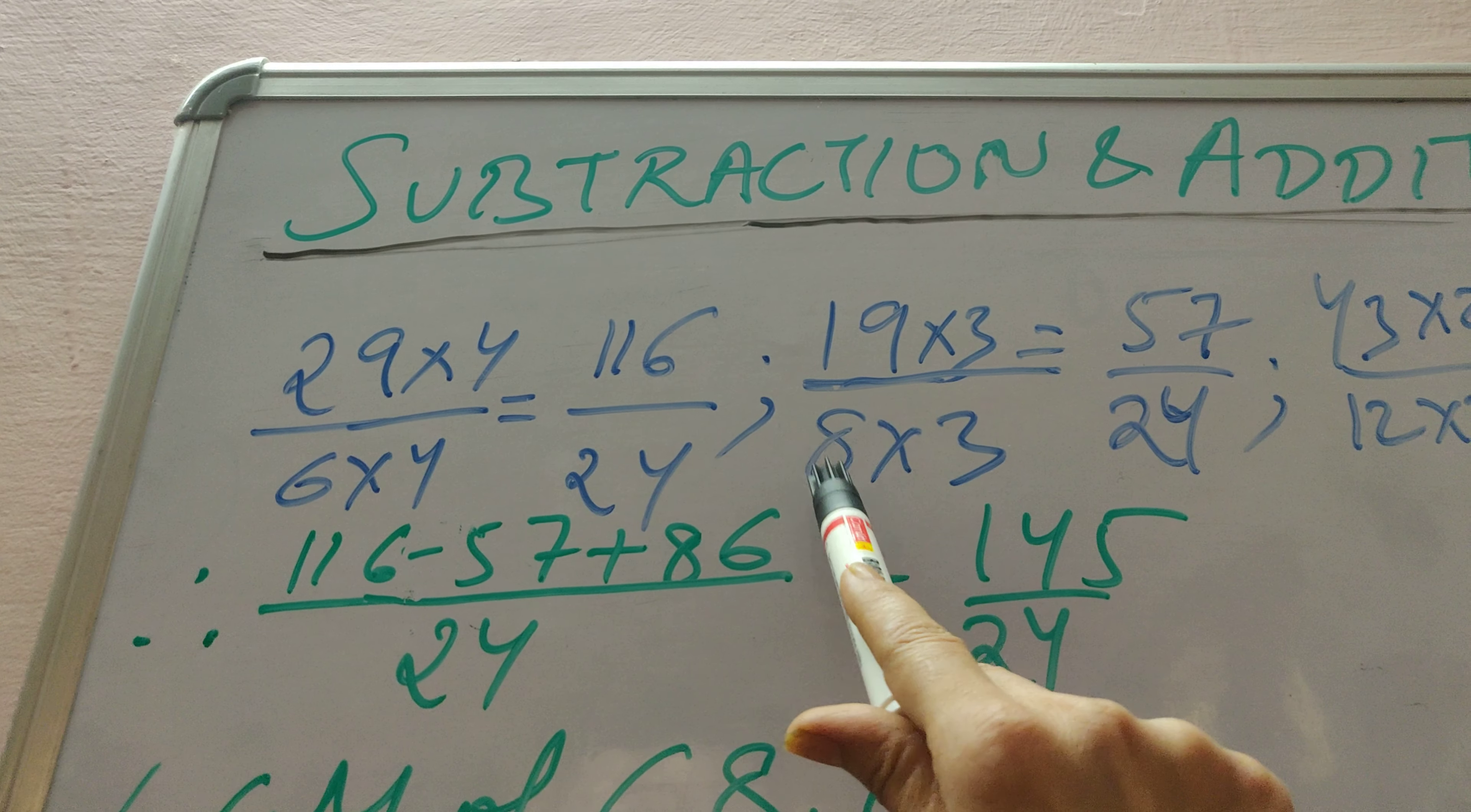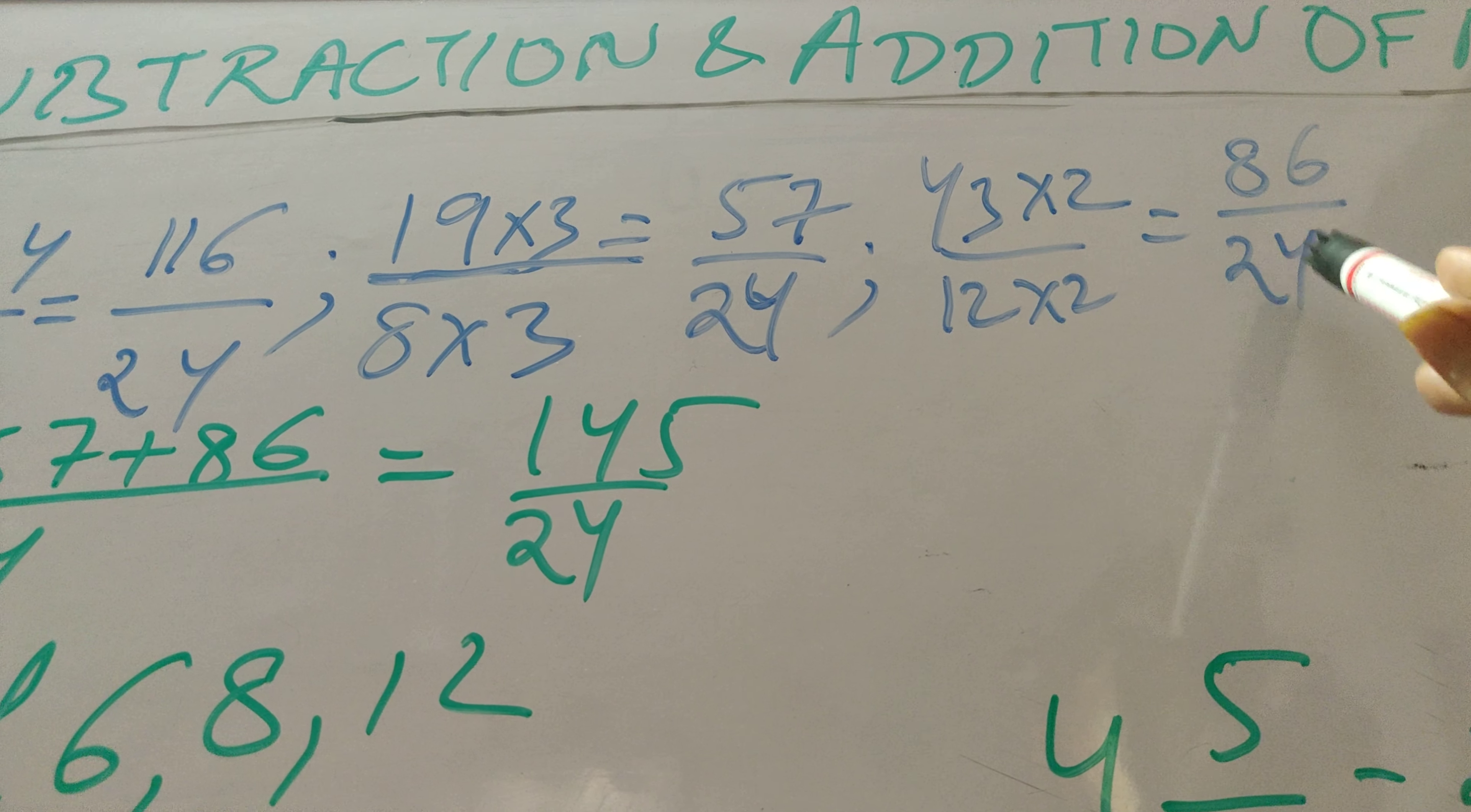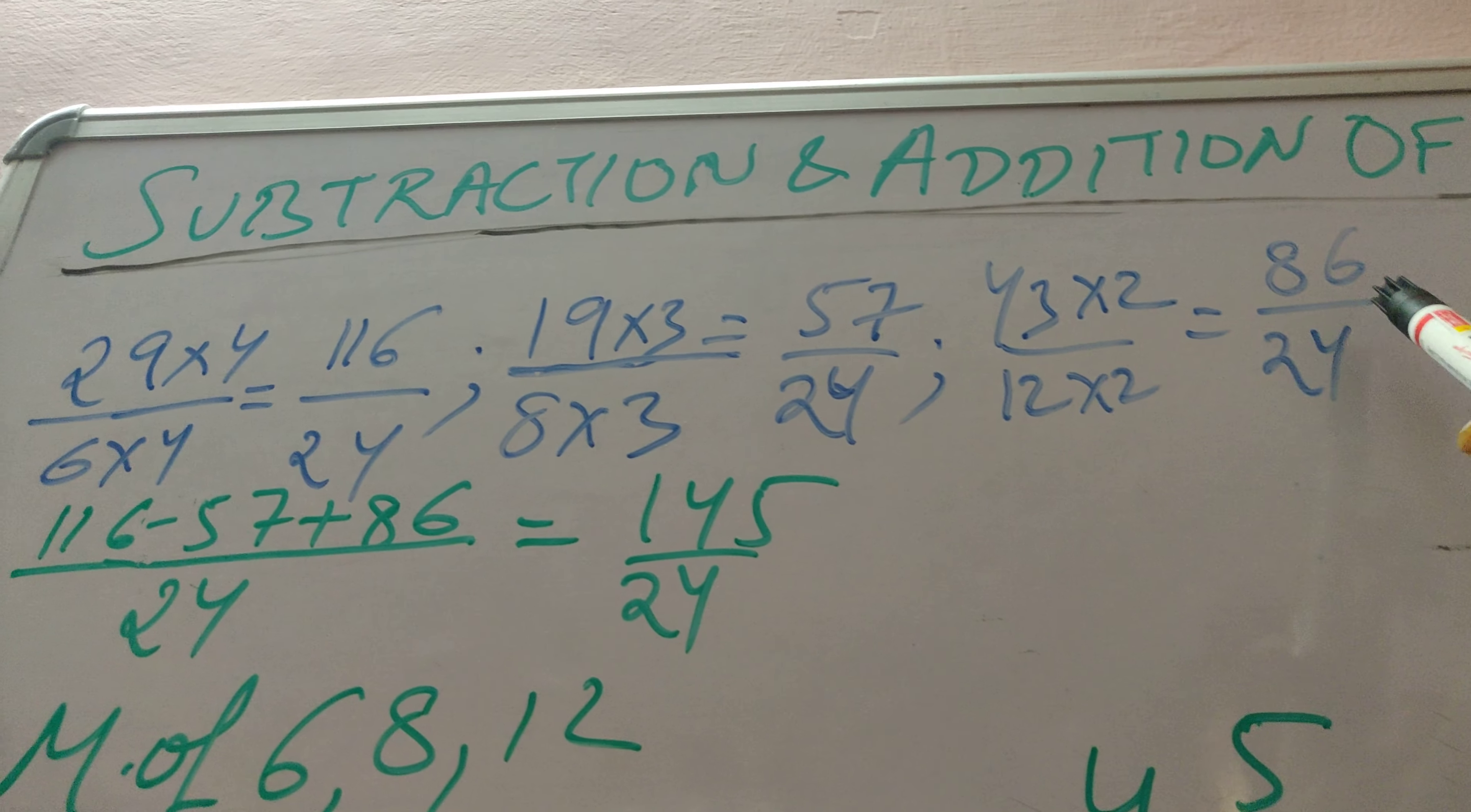19 times 3 by 8 times 3 will be 57/24. 43 times 2 divided by 12 times 2 will be 86/24. So in each of these cases you see 116/24, 57/24, and 86/24.